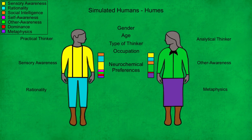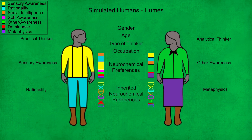Only the top two neurochemical preferences can be seen for each Hume, as represented by the color of their clothes. However, each Hume has a value for each of the seven neurochemical processes of their brains, which can change throughout their lives due to the influences acting on them. But Humes also have inherited neurochemical preferences that don't change throughout their lives, and can be thought of as analogous to their DNA. The values for each of these inherited processes are constant, and are passed on to their children with a small amount of variation.